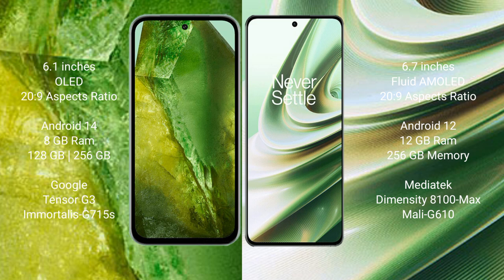Google Pixel 8a runs on the Android 14 operating system. OnePlus 10R runs on the Android 12 operating system. Google Pixel 8a comes with 8GB RAM.